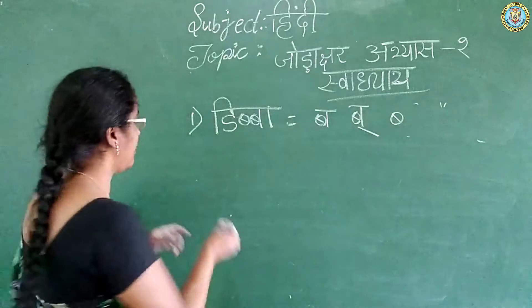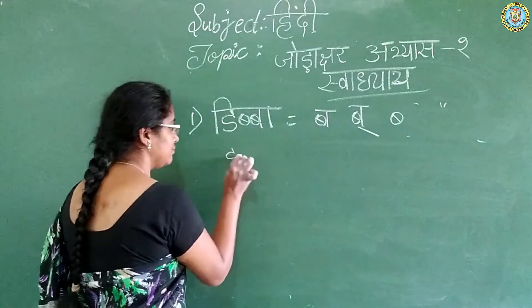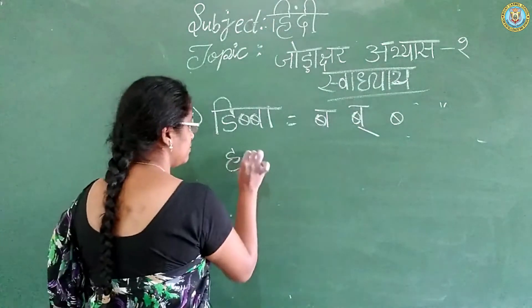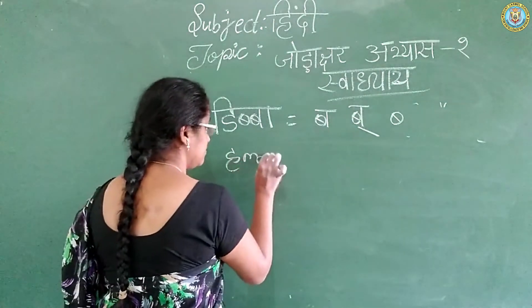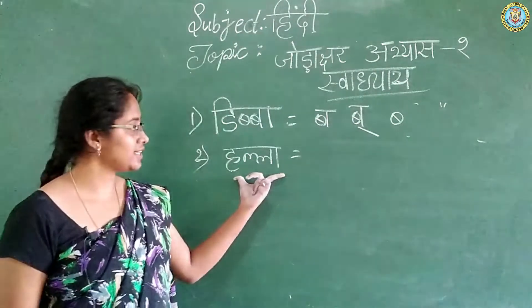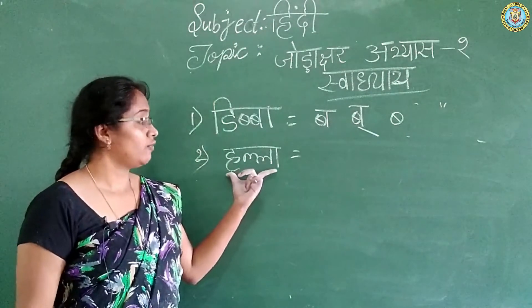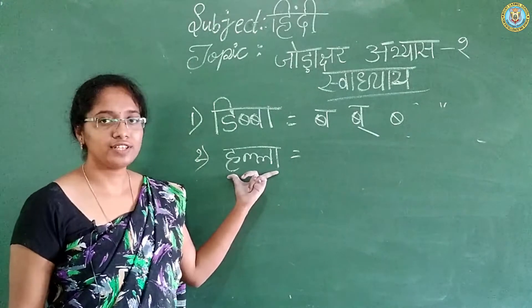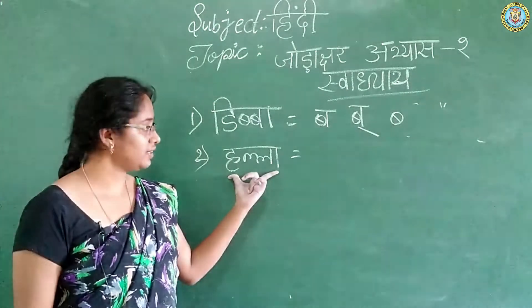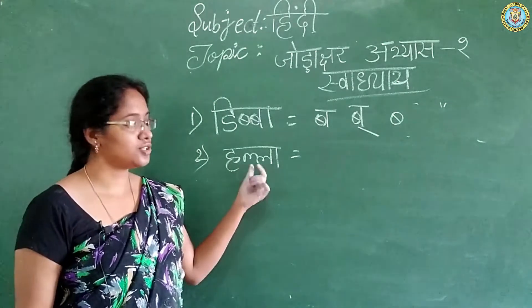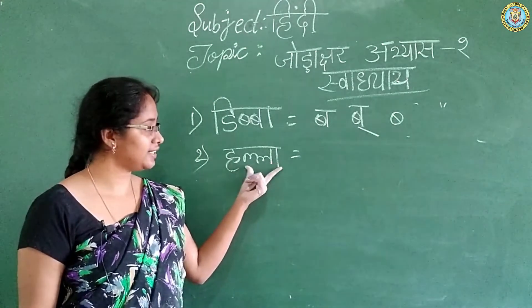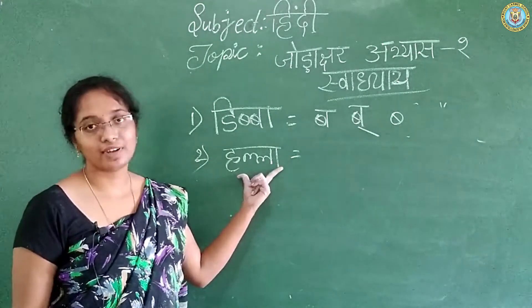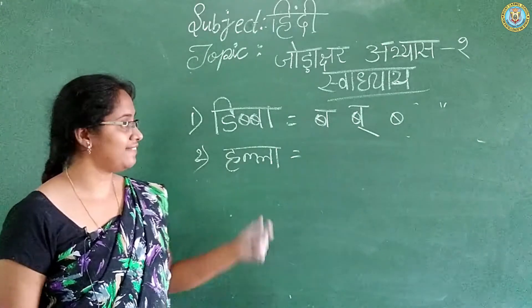The next word is Allah. So, in this word, where is the Chodakshar? The Chodakshar is here — La. Allah.